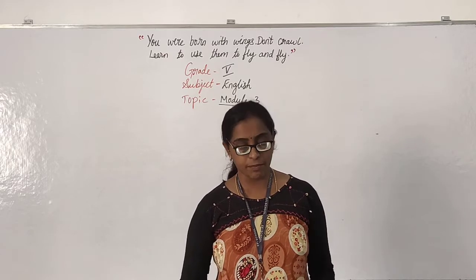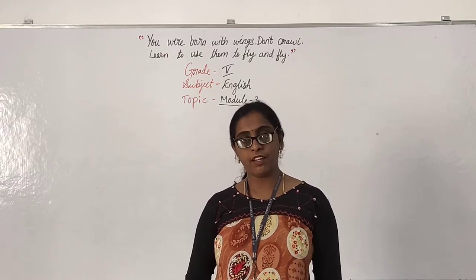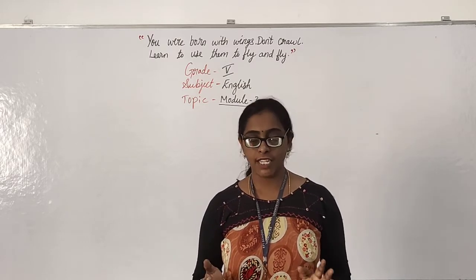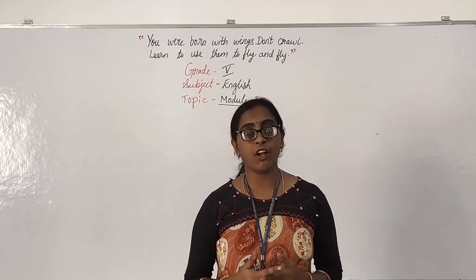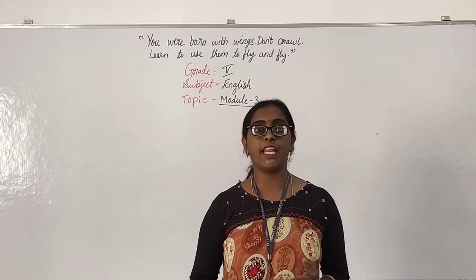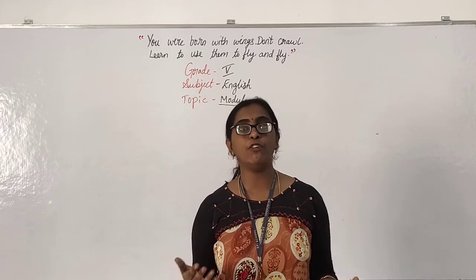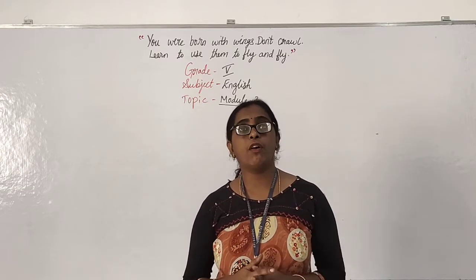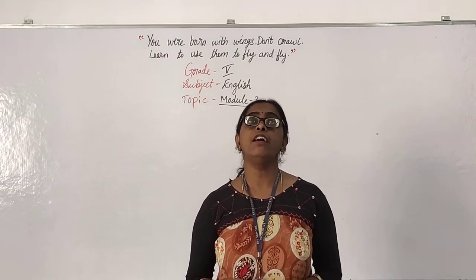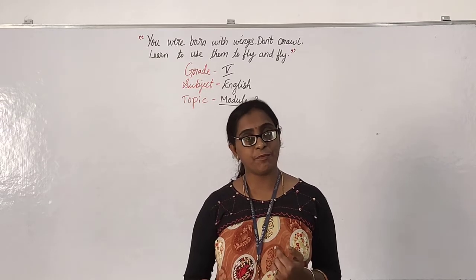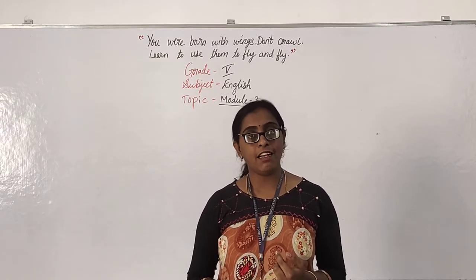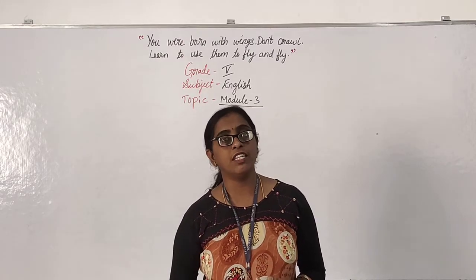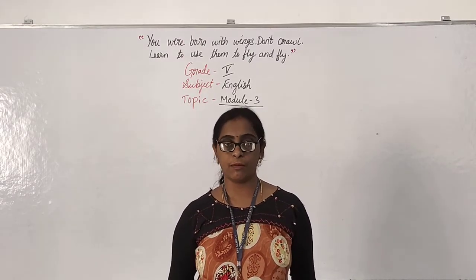Then we learned countable and uncountable nouns. Countable nouns are things, animals, or persons that we can count. Uncountable nouns are things which we cannot count at all — for example, rice, milk, wheat flour. These are uncountable nouns.